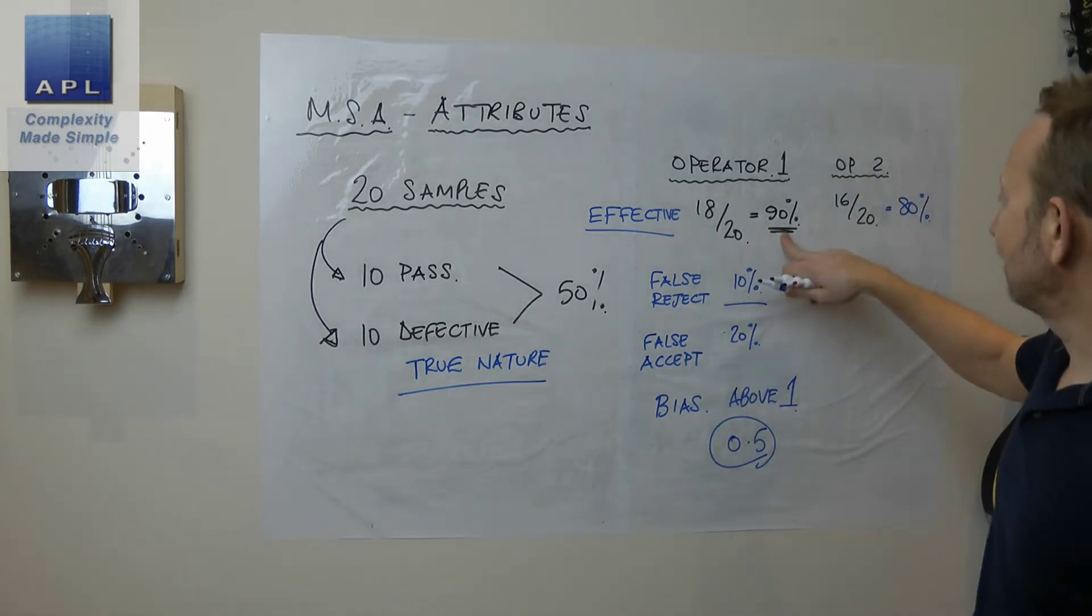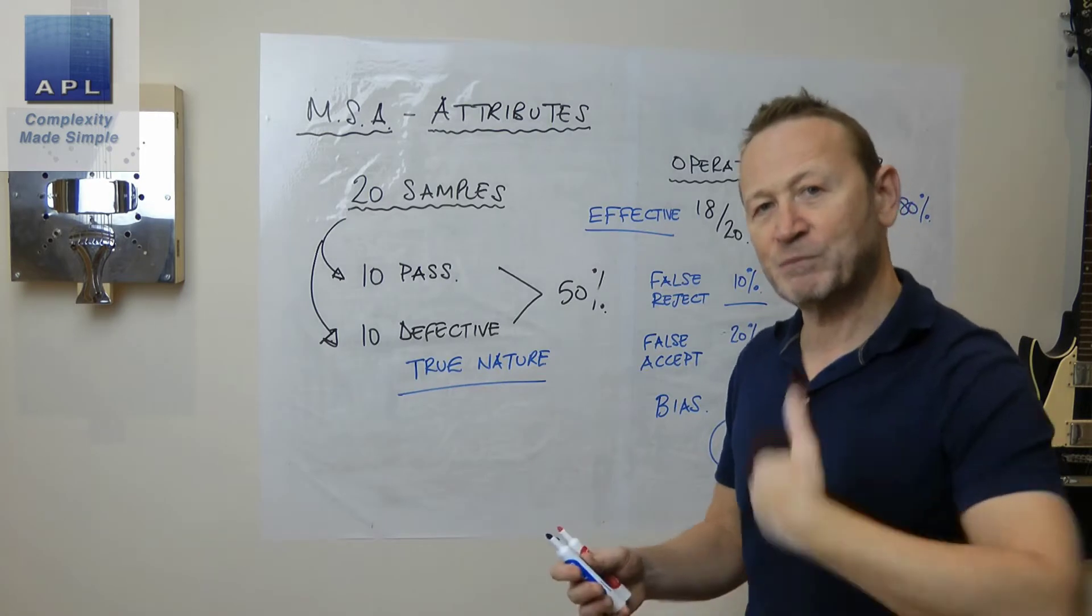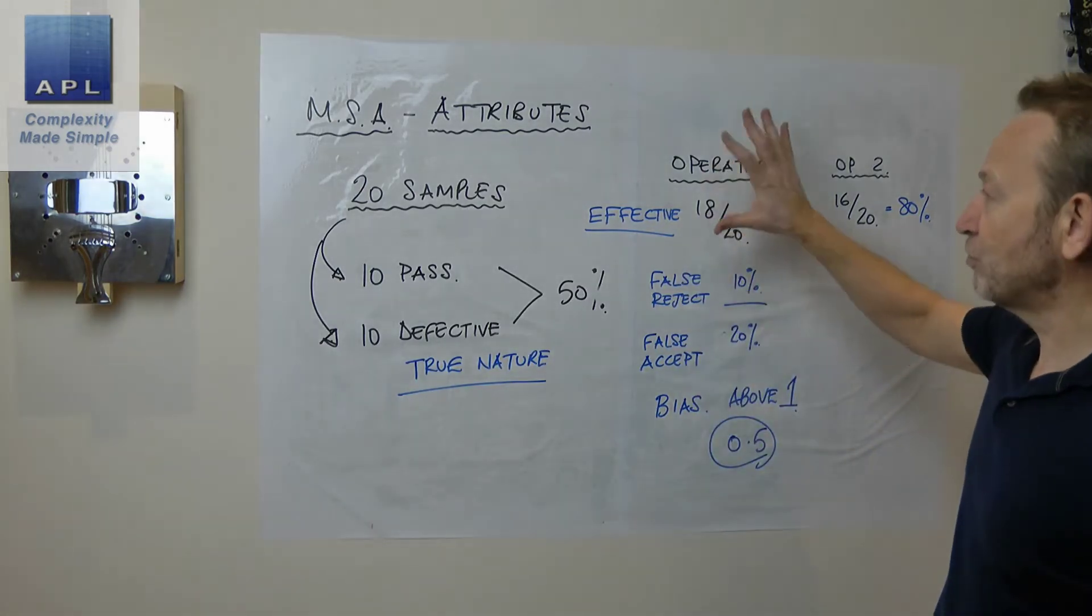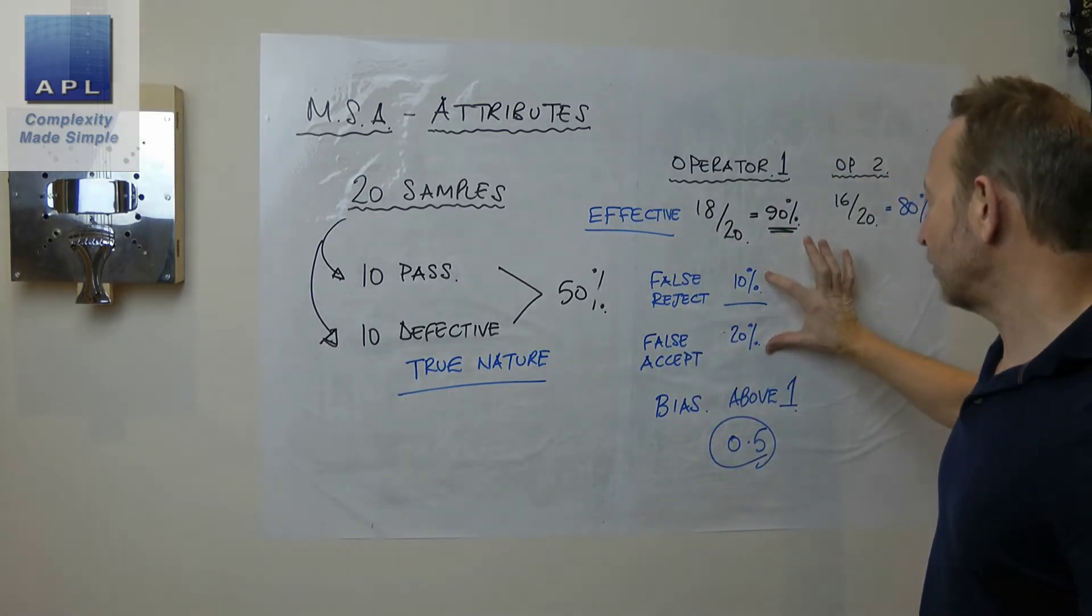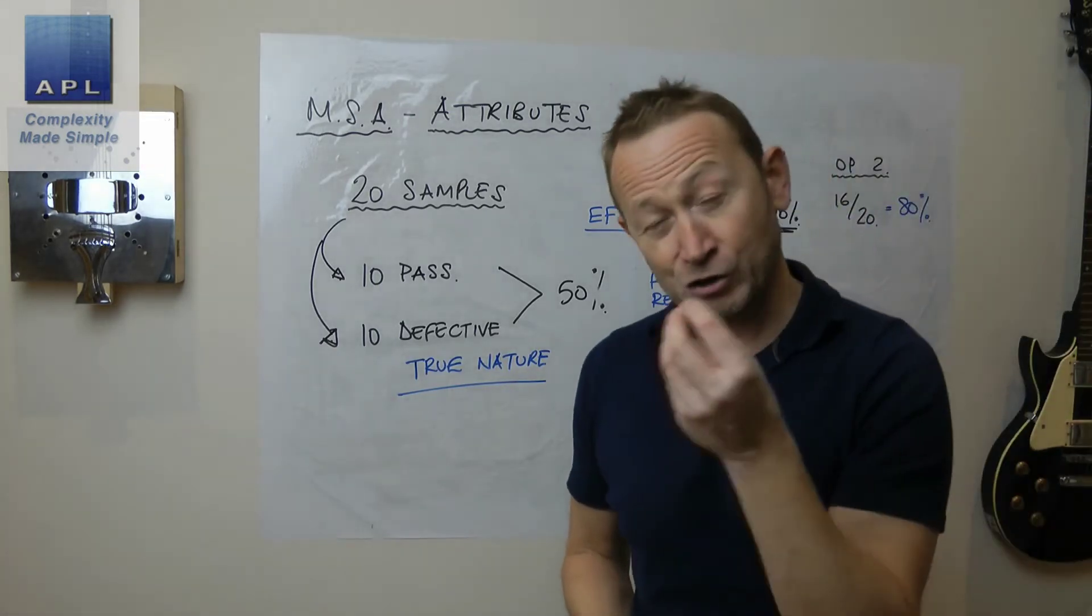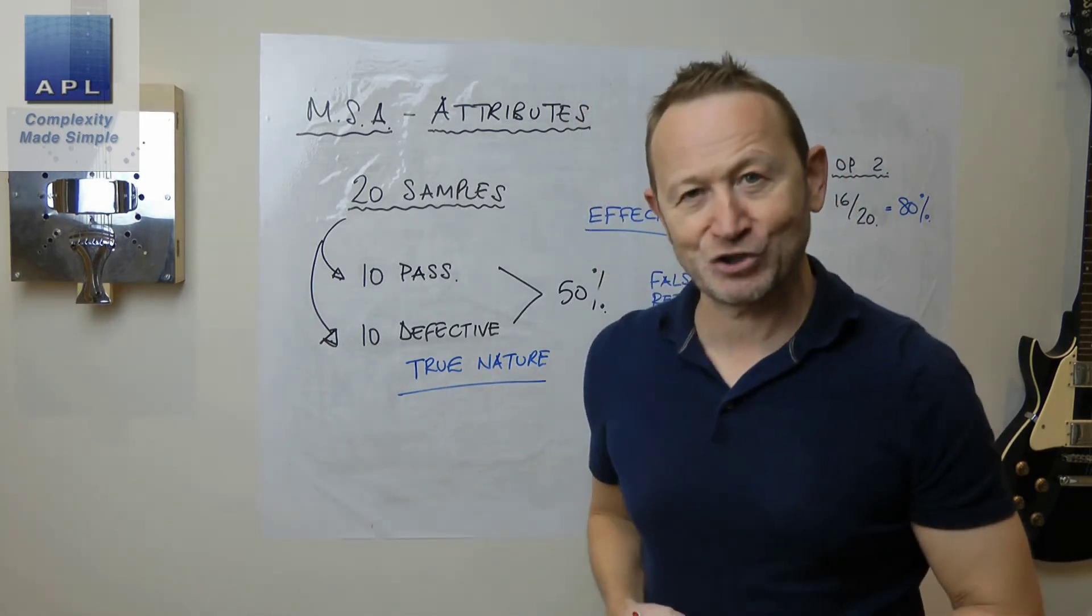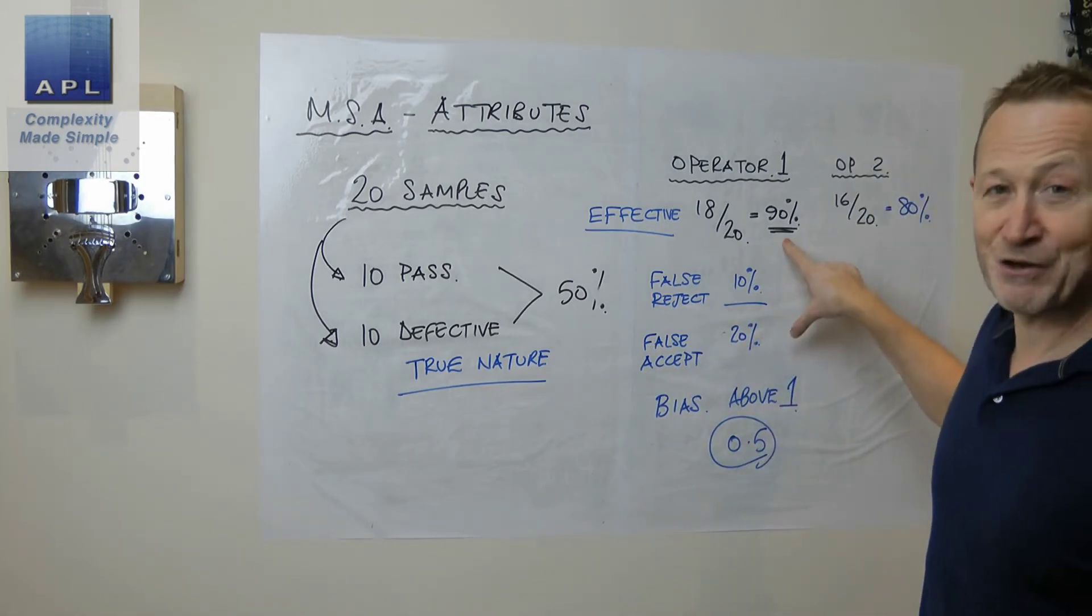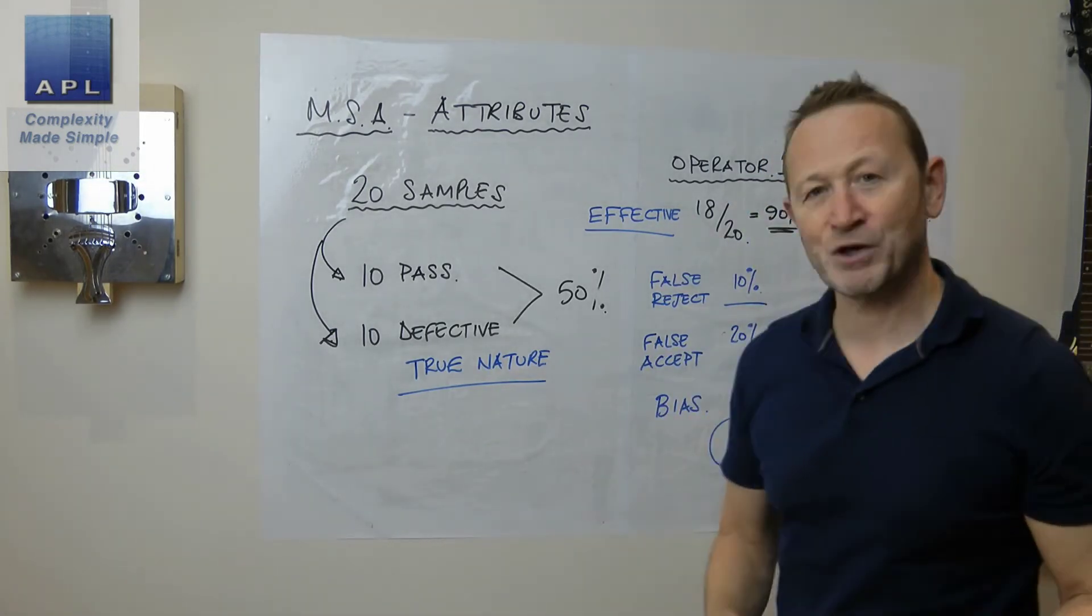So here, if we said this person was 90% effective, but they had a bias to being too loose, we would still say they need work, they need help to refresh their standards. So they're the statistics that you work out in an MSA for attribute. You check to see if they are overall effective. You check what the bias, you check what the false reject rate and false accept rate is. You check that the bias, they are too tight. They are keeping the mistakes in-house instead of pushing the mistakes to the customer. So as long as we're too tight, the mistakes that we're making stay in-house. And that's the way you get around the problem of, well, we're making a mistake 10% of the time. Yeah, but we're keeping them all in-house. And that's really what you should be aiming for.